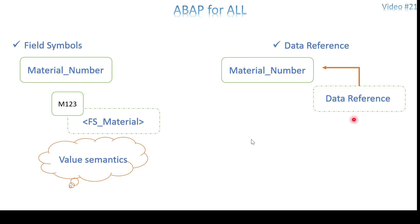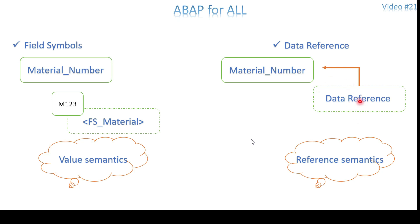A data reference is also a variable, but technically it is declared with the TYPE REF TO keywords, so we call it a data reference variable. From the product perspective, field symbols use value semantics, while data references use reference semantics. We will look at the data content of the data reference in a couple of slides. This gives us a single-line overview of what field symbols and data references are.